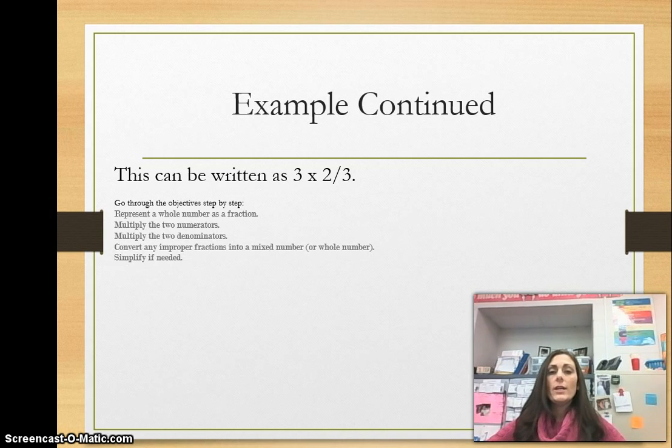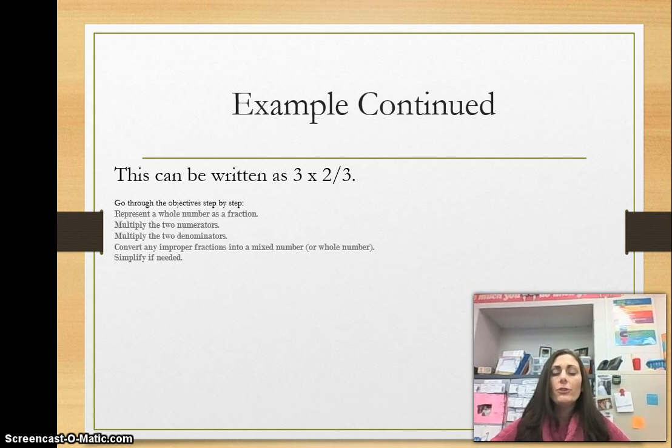So this is going to be written as three times two-thirds, just how it says. And if you look, it says go through the objective step by step. If you've noticed, the first thing that we need to do is represent the whole number as a fraction. So here's my whole number, and I'm going to represent it as a fraction by putting a one underneath it.